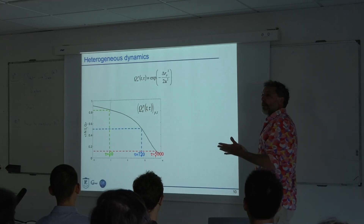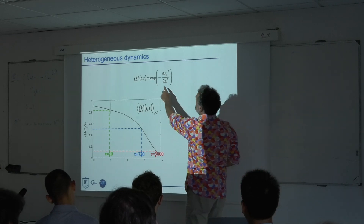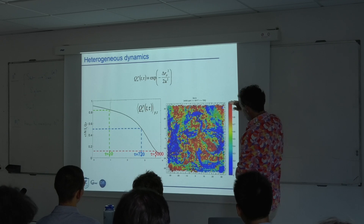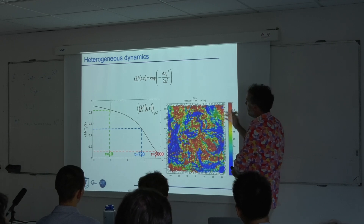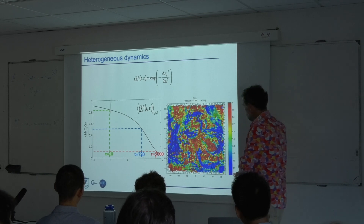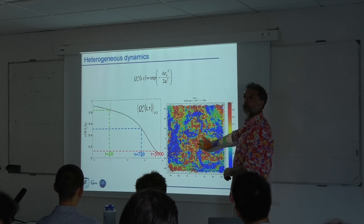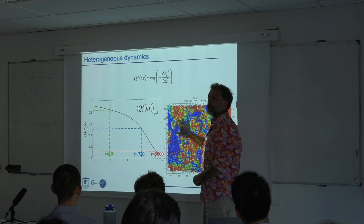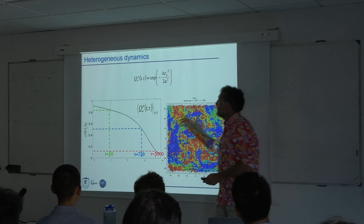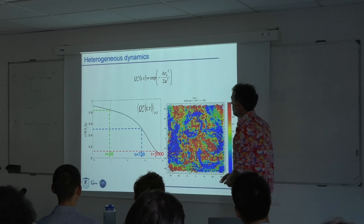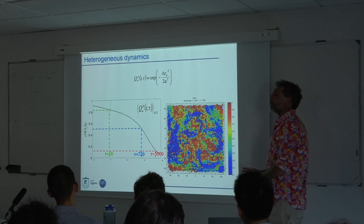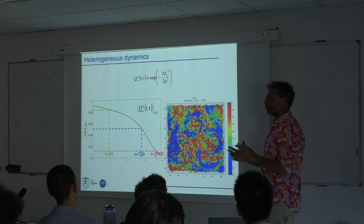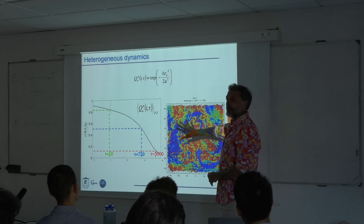In real space, you can look at this field colored by its intensity between zero and one. What you see is that there are regions that have moved a lot — the blue regions, where this quantity is zero — and regions which have not moved. The dynamics is heterogeneous. That was the first time we observed dynamical heterogeneities in systems that exhibit glassy dynamics. The title of the paper mentioned 'dynamic heterogeneities close to jamming,' which was not the right use of the word 'jamming' at the time — it is really close to glassy dynamics.